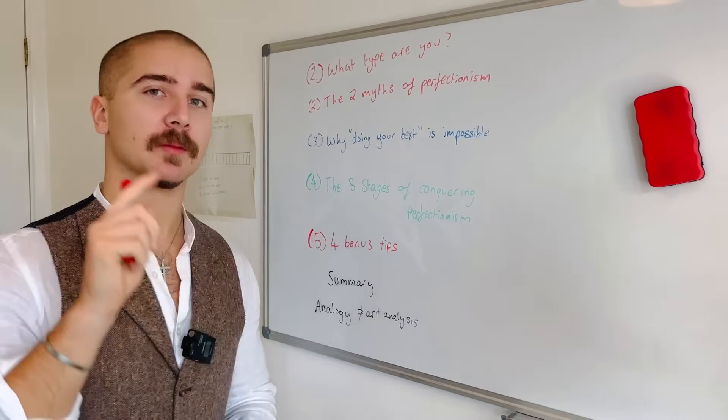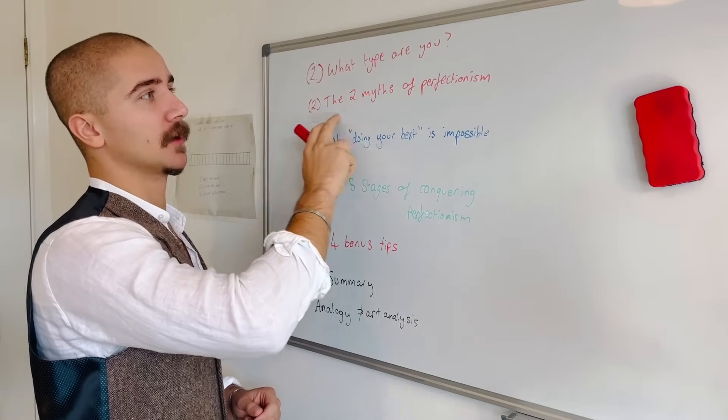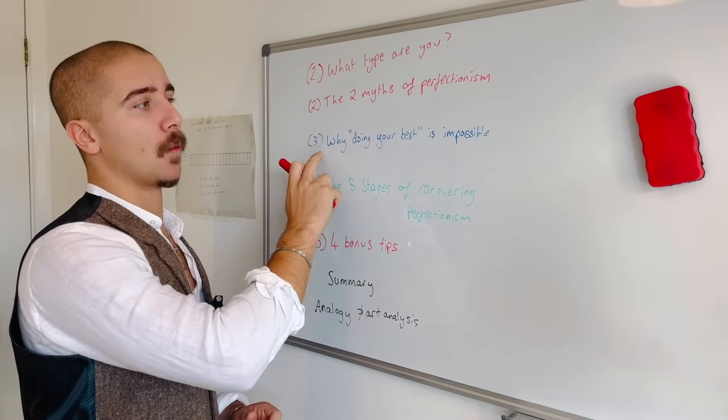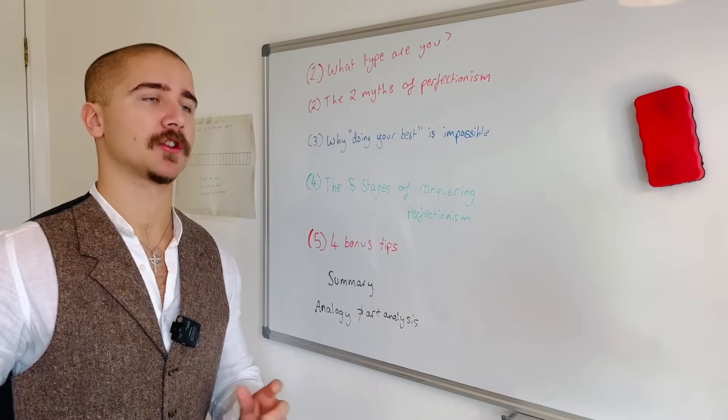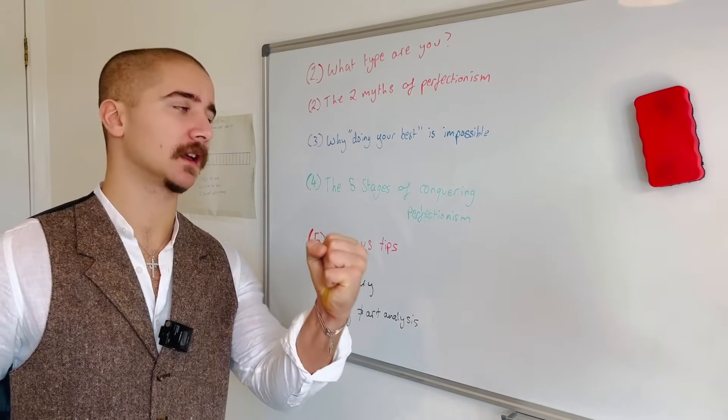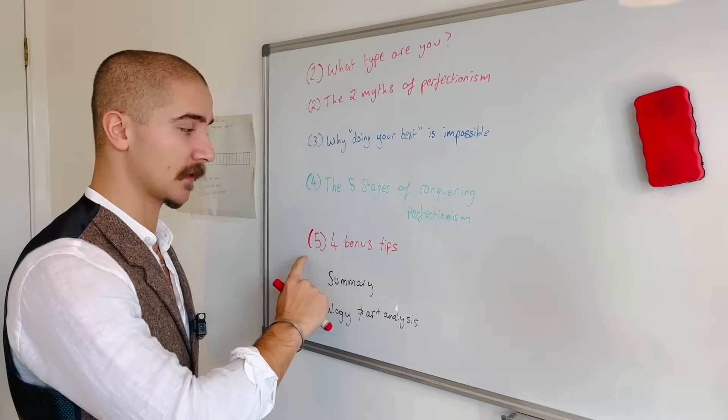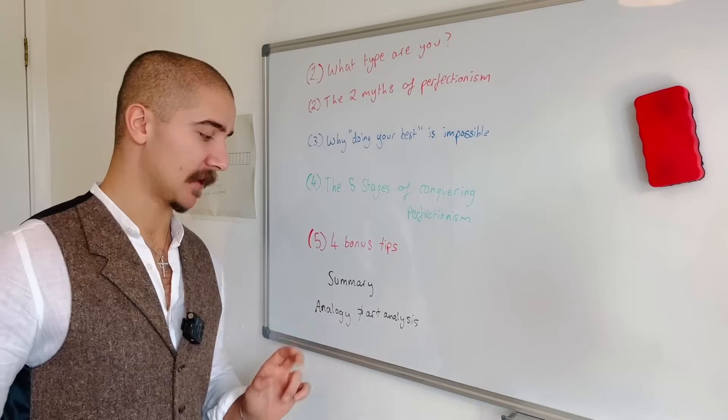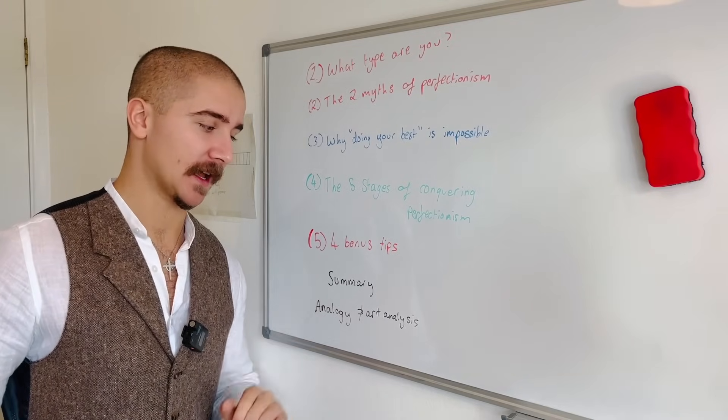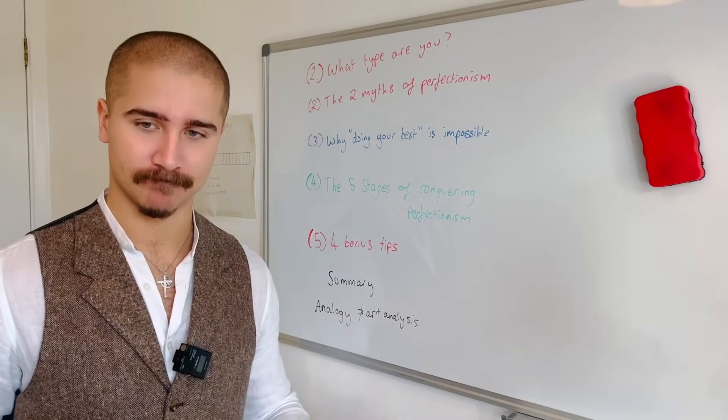So this is what we're going to cover within the next few minutes: what type of perfectionist you are, the two myths of perfectionism, why doing your best is impossible and the most annoying advice in the world, the five stages of how to conquer perfectionism, four bonus tips, a summary, then we'll finalize with an analogy and art analysis.